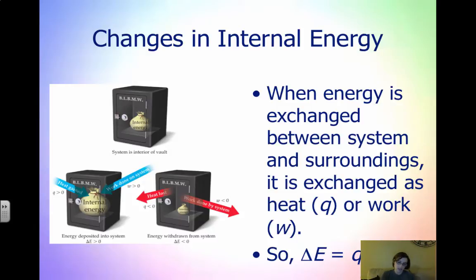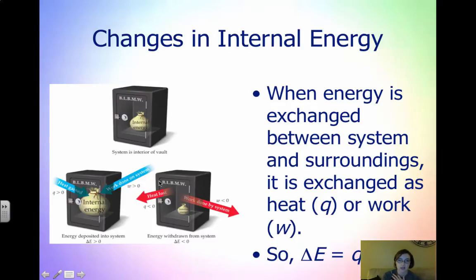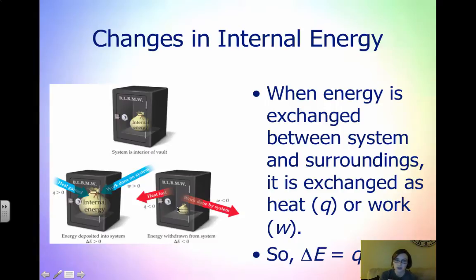When heat is added to a system or work is done on a system, delta E is going to increase. You can think about changes in internal energy like a bank account. If we think about the inside of a safe as our system, if heat is gained or work is done on the system, you're putting money into the safe — so delta E is greater than zero. If it is losing heat or work is done by the system, that's like taking money out of the safe, and delta E is going to be less than zero.